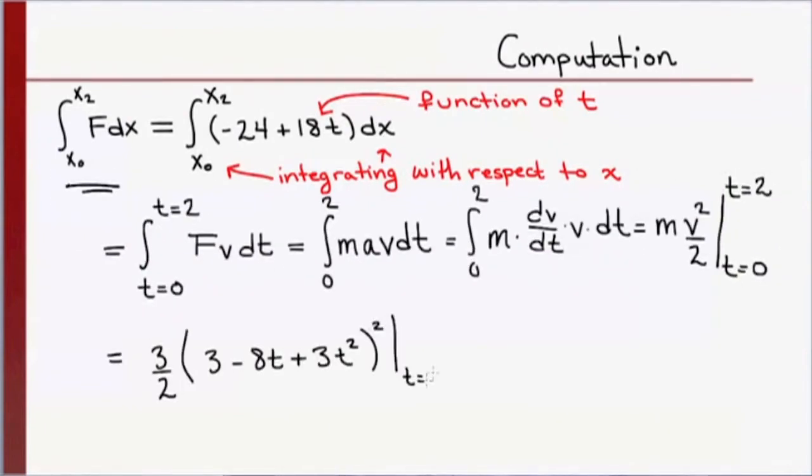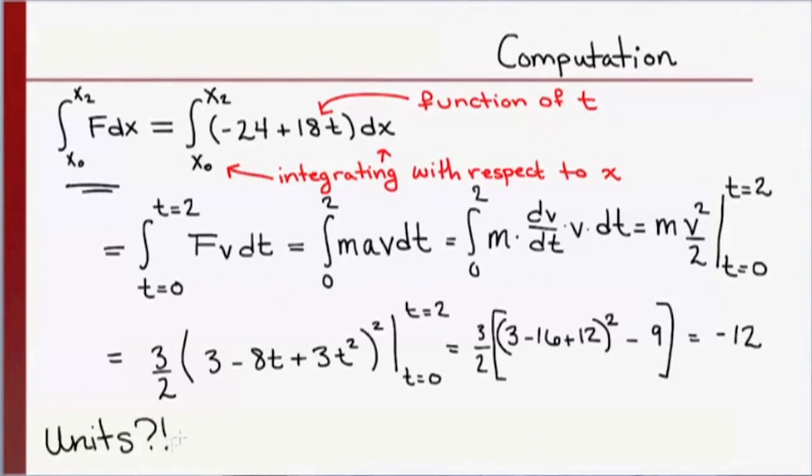So now we see how to integrate this and we find that the integral is m times velocity squared divided by two evaluated at the two time endpoints. Plugging in our formula for the velocity and evaluating we get that the answer is negative 12. I intentionally left off the units while doing this computation. Now I leave it as an exercise for you to use unit analysis to check that this integral does in fact give you newton meters or joules the units of work.